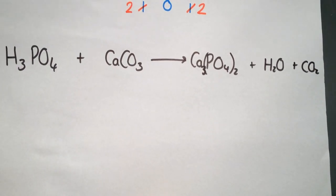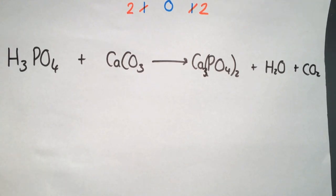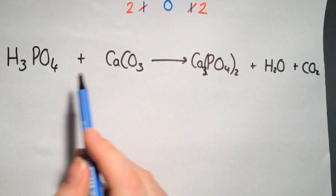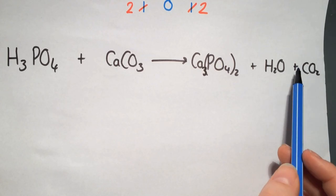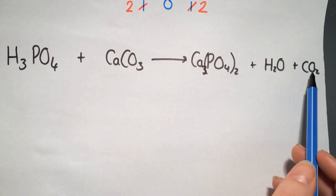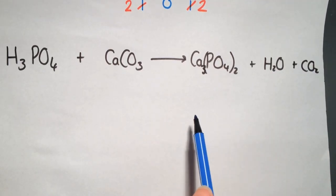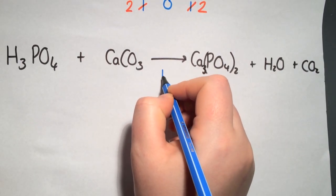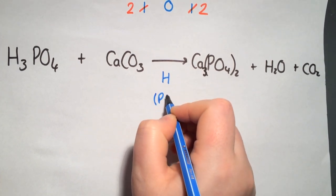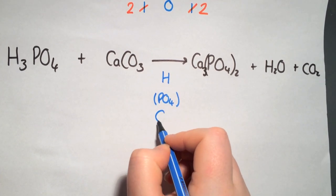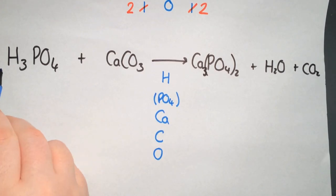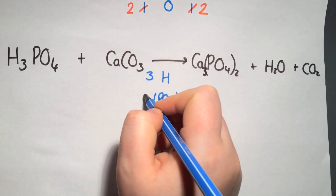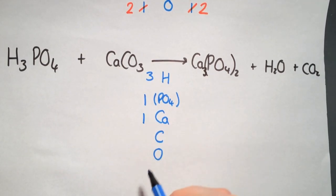In our final example, a slightly larger one, we again have a group ion, and another group ion that on the right hand side has been split up so that the oxygen has been taken by the water and carbon dioxide — so it's no longer a group ion and we need to write it out completely. We have hydrogen, PO₄, calcium, carbon, and oxygen. On this side we have three hydrogens, one PO₄ group, one calcium, one carbon, and three oxygens.